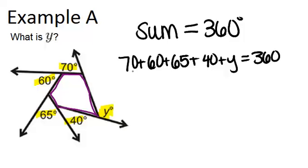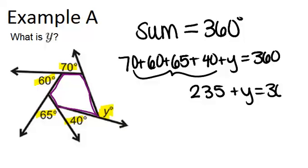So we can solve this equation by first combining all of those numbers together to get 235 plus Y equals 360.